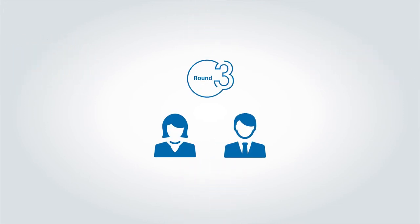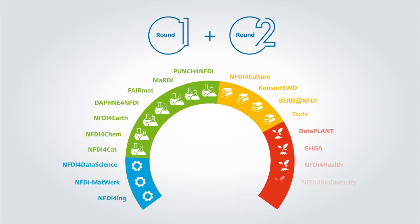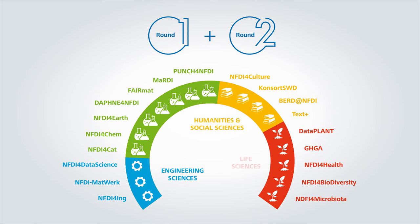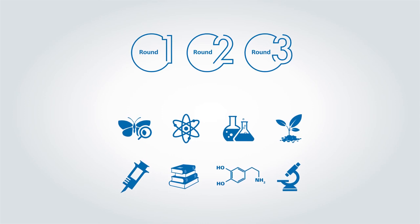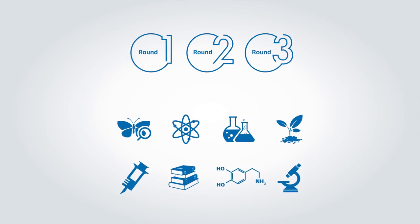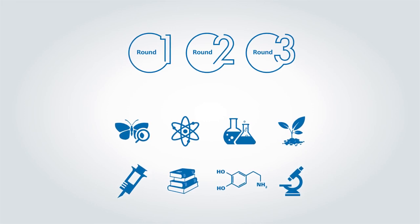When reviewing the consortia proposals for the third round, we ask you to take two aspects into account. First, the decisions made in the first two selection rounds. Of the 19 consortia selected, three are from the engineering sciences, four from the humanities and social sciences, five from the life sciences, and seven from the natural sciences. The second aspect to keep in mind is that the third selection round is the final round for the present. At the end of the three rounds, all scientific disciplines should be represented adequately in the NFDI without any omissions or disproportionately high representation.